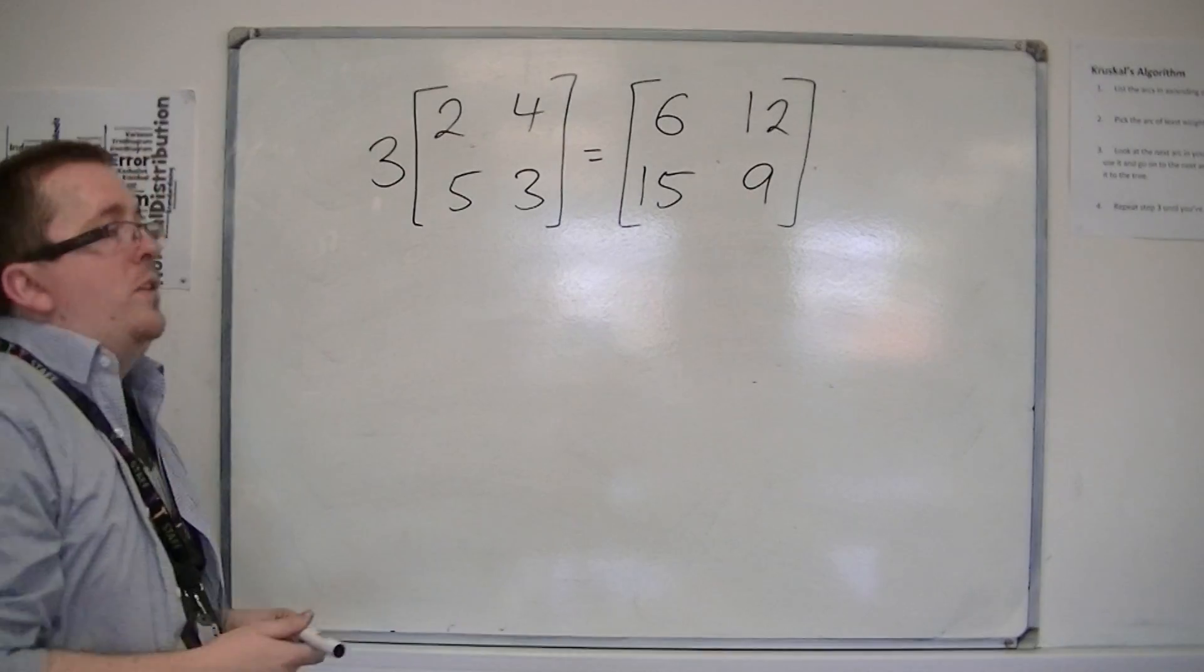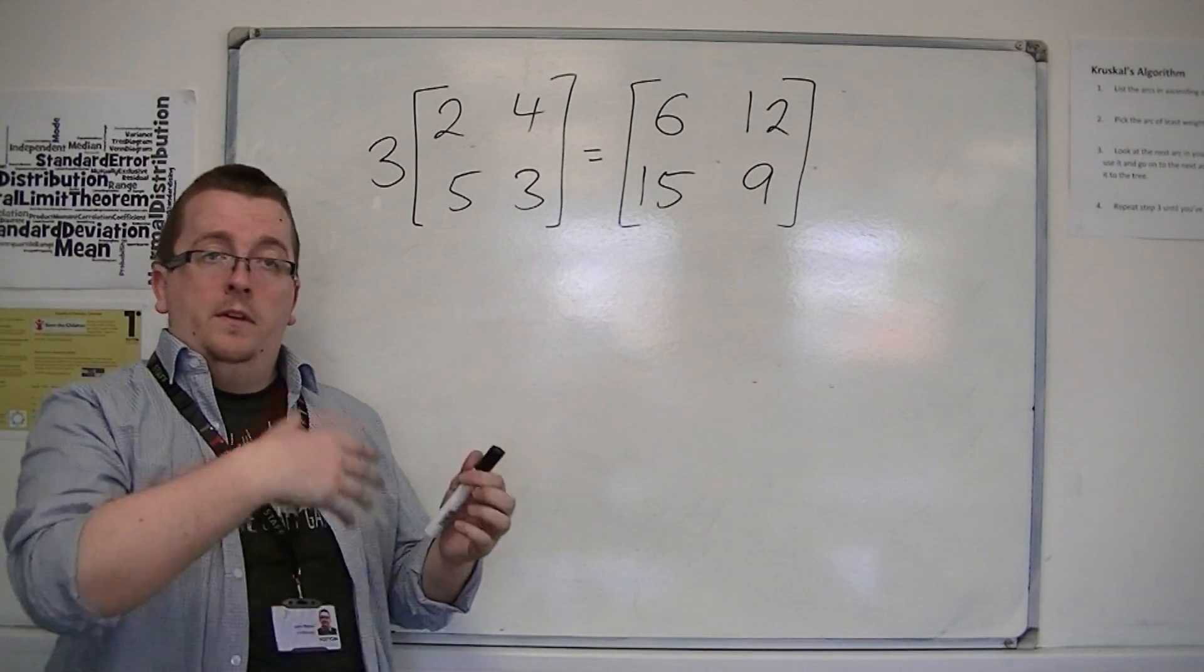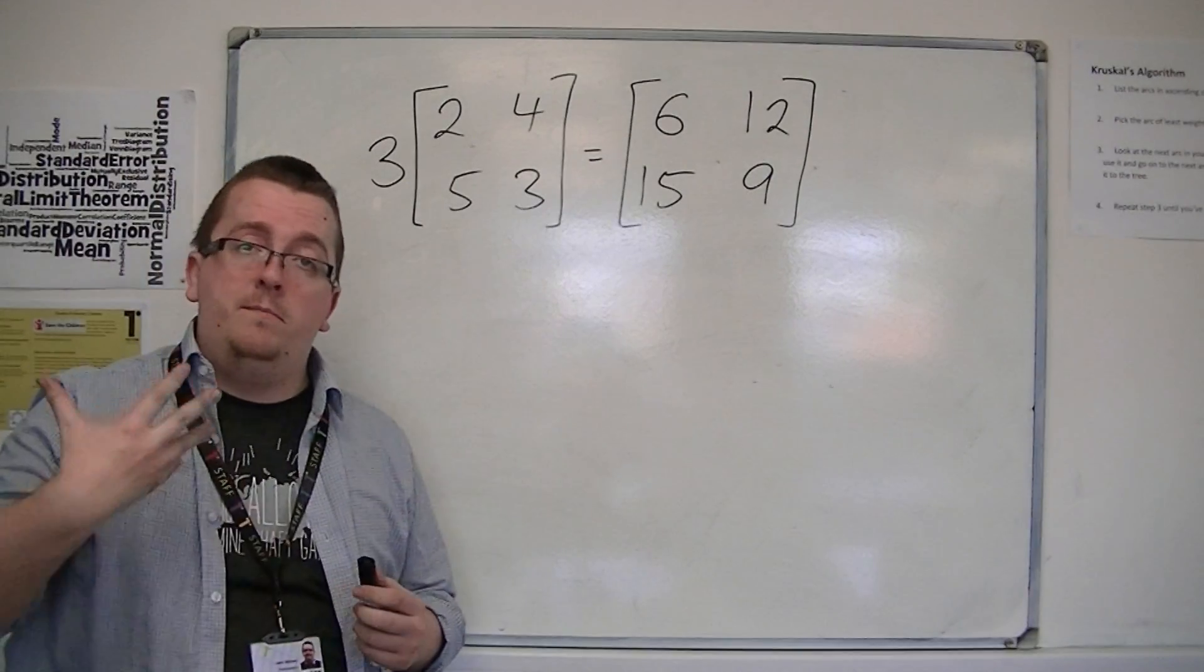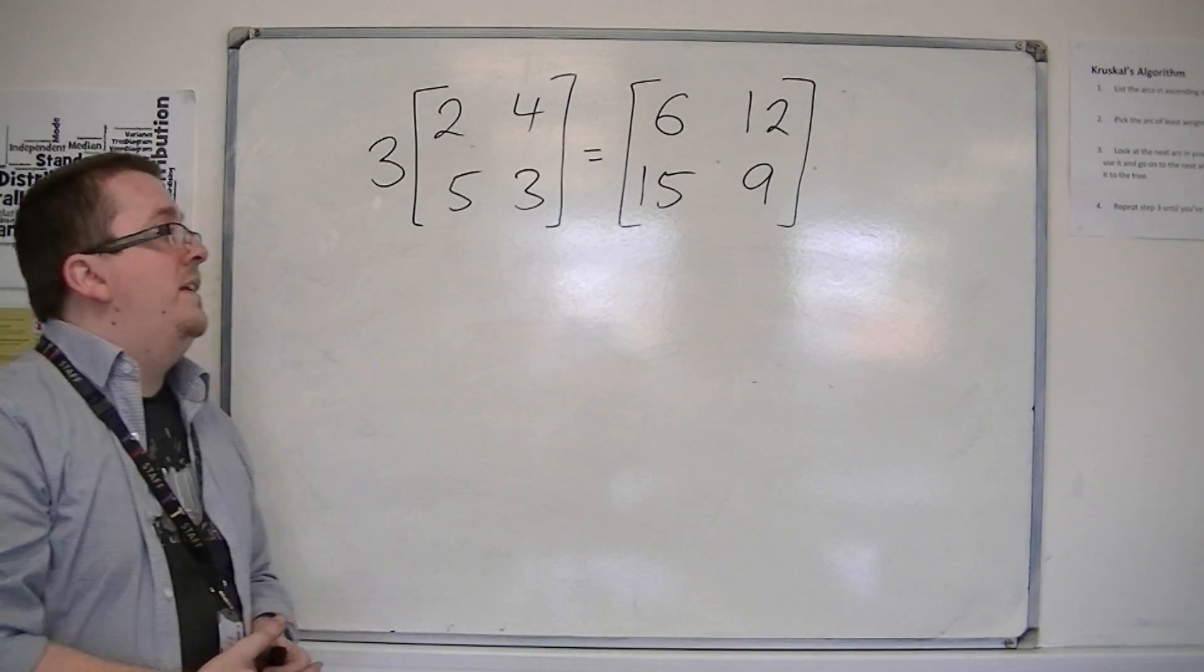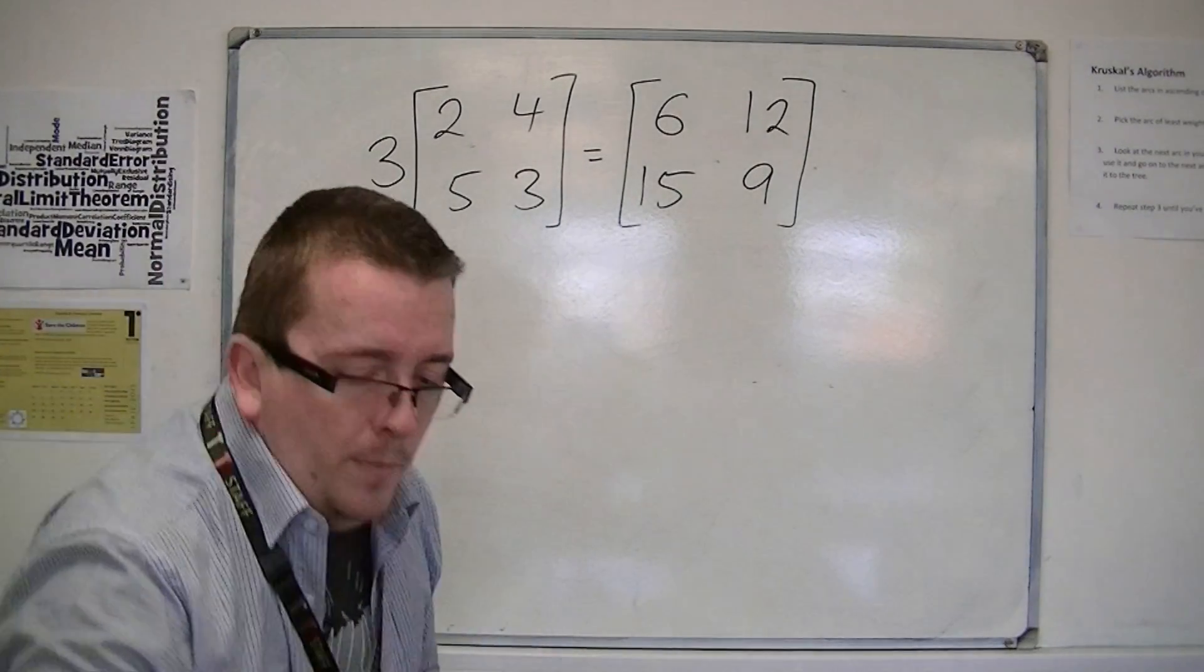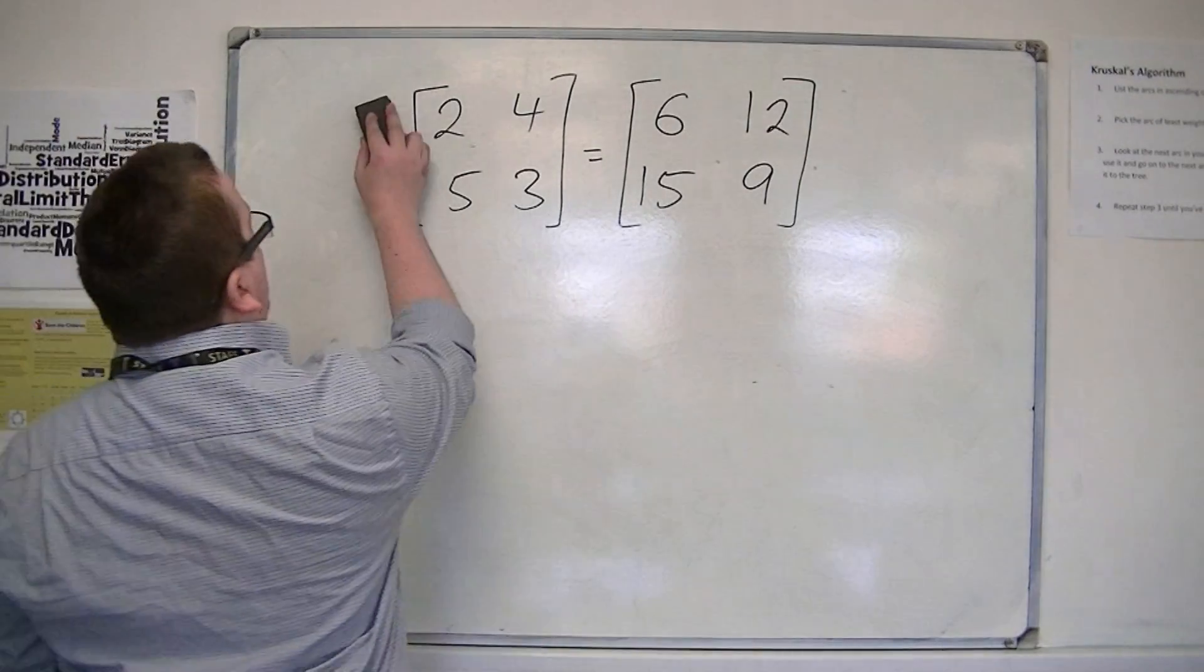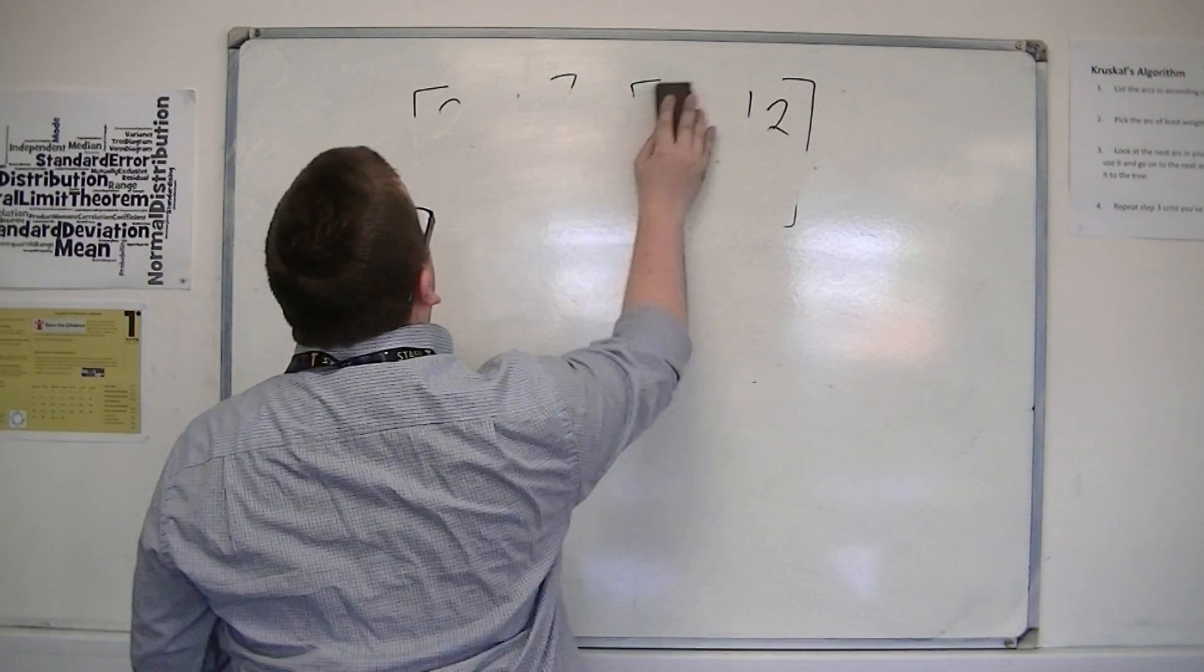So a matrix can be multiplied, will have a coefficient on the outside and multiplies each element by that number. But really what we want to know is how can we multiply two matrices together.